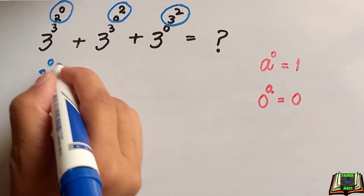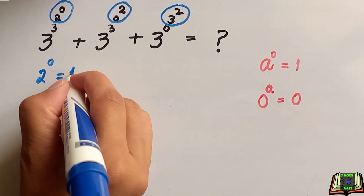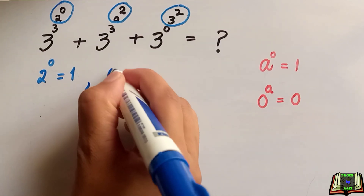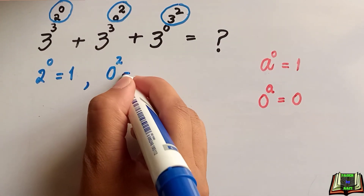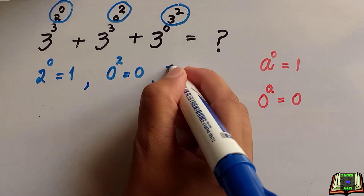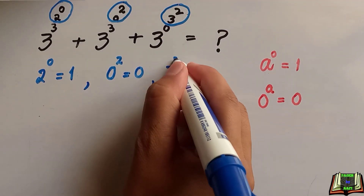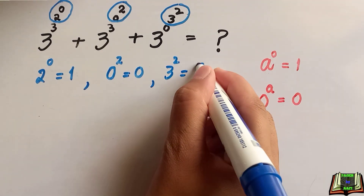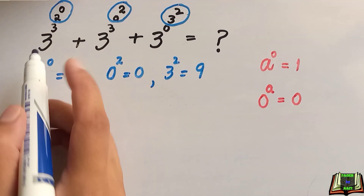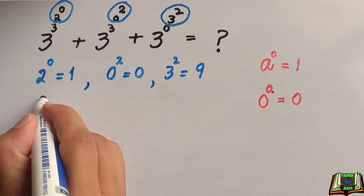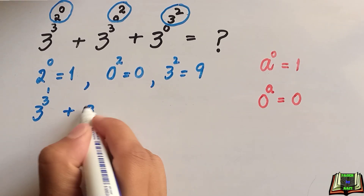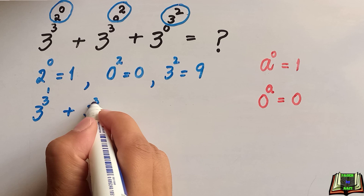2 raised to power 0 is equal to 1. 0 raised to power 2 is equal to 0. And 3 raised to power 2 means 3 times 3, which is equal to 9. Now putting the values of these parentheses into the original equation, we get: 3 raised to power 3 raised to power 1, plus 3 raised to power 3 raised to power 0, plus 3 raised to power 0 raised to power 9.